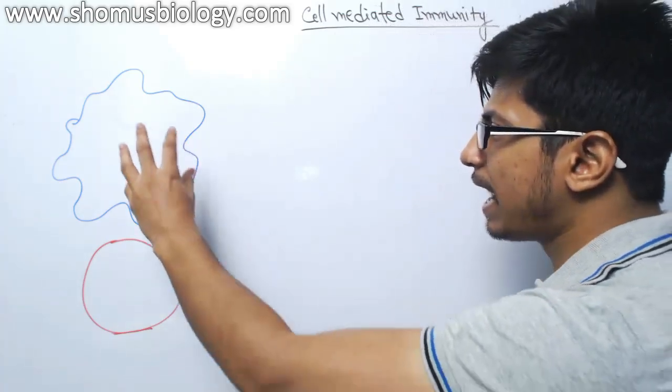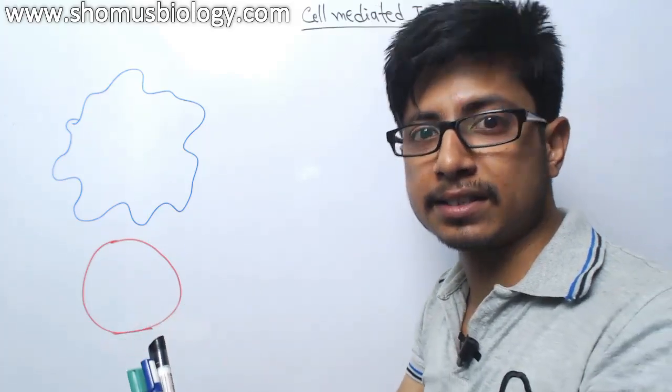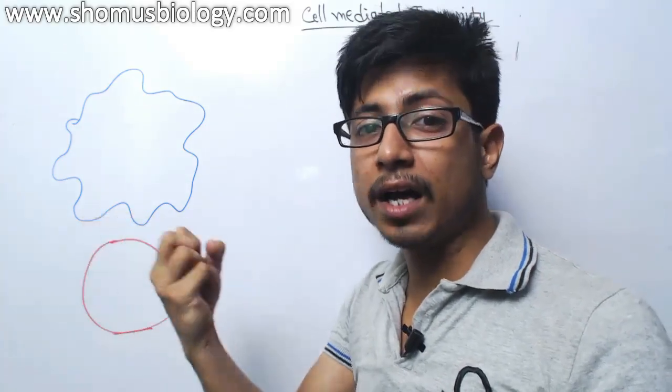It starts with macrophages and dendritic cells, those are antigen presenting cells. So they will not only engulf antigen, they will break them down and show them to T-cell.